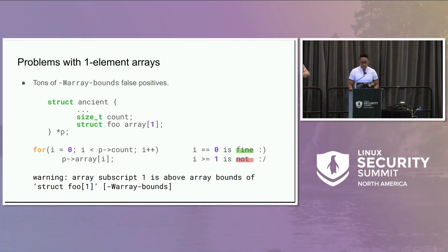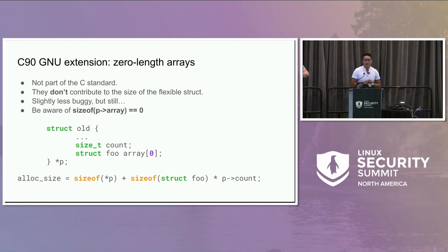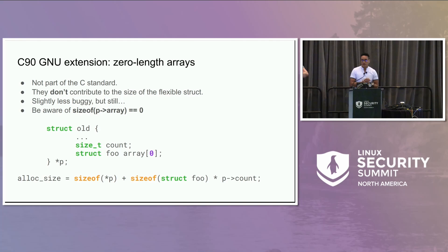What are the problems with zero-length arrays? They are slightly less problematic but still notable. First, they are not part of the C standard. We have detected code where developers applied the sizeof operator to this type of array. The issue is we always get zero as a result, and developers were using that zero result in other operations like multiplications — trying to get the total size of the array at runtime. So we had to fix that.